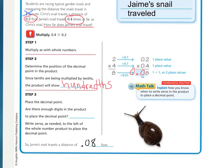Let's look at the math talk box. It says: explain how you know when to write zeros in the product to place a decimal point. Did I have enough digits to have two decimal places with just the answer of eight? No — I needed to add that zero to make it so I had the correct number of decimal places. You add zeros when you need more decimal places.